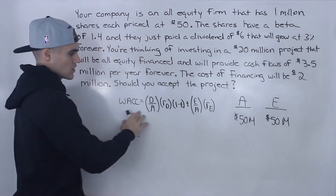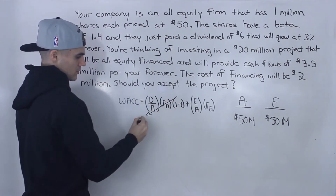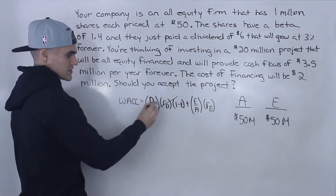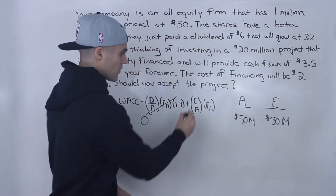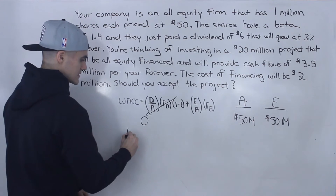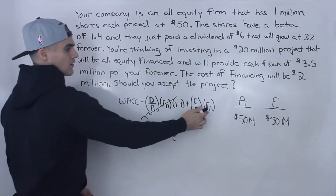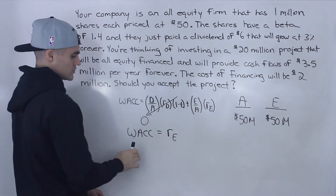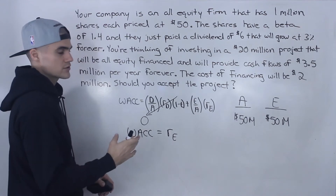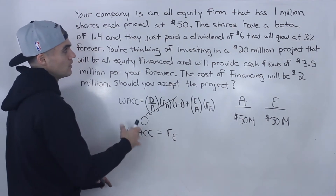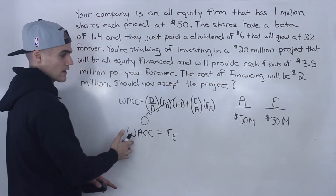Going back to the weighted average cost of capital formula: if debt is zero, the entire debt expression goes to zero. The equity-to-assets ratio becomes 1. So the WACC of an all-equity firm is just equal to its cost of equity, RE. Whenever you see an all-equity firm, remember WACC equals RE. Any projects you evaluate, you discount their cash flows using that return on equity.